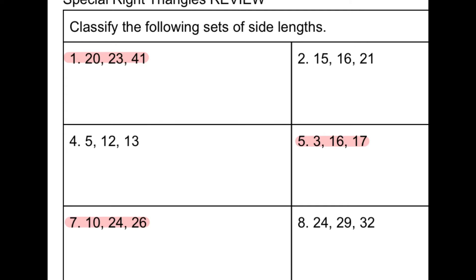So remember, first you always have to check to see if it's a triangle. We take our two smallest — we have 20 — and add it to the second smallest, 23, and see if it's greater than the largest, which is 41. So 20 plus 23 gives me 43, which is greater than 41, so I can continue on.